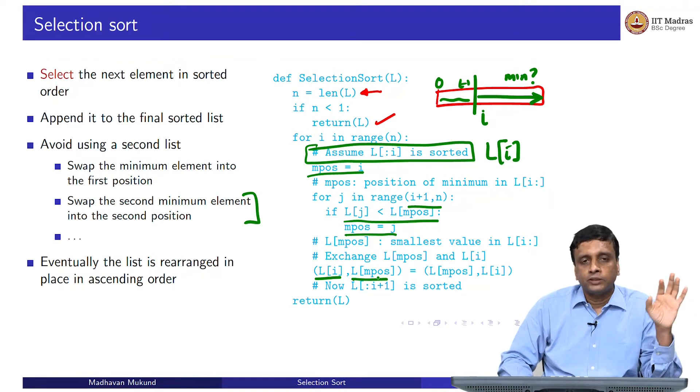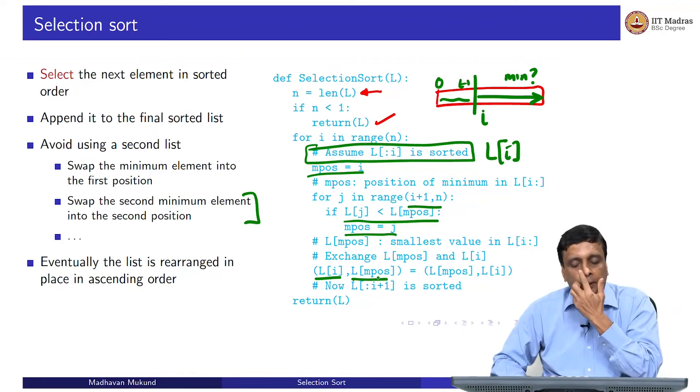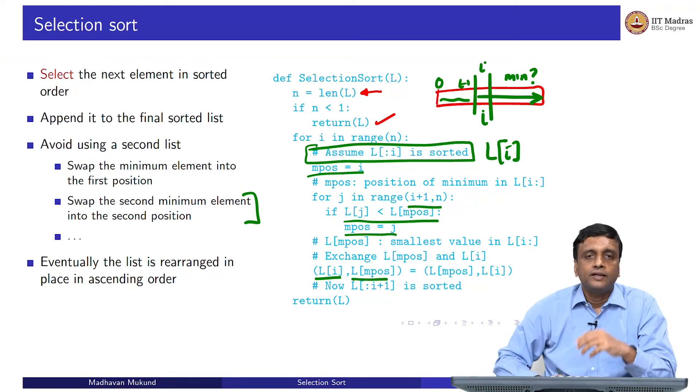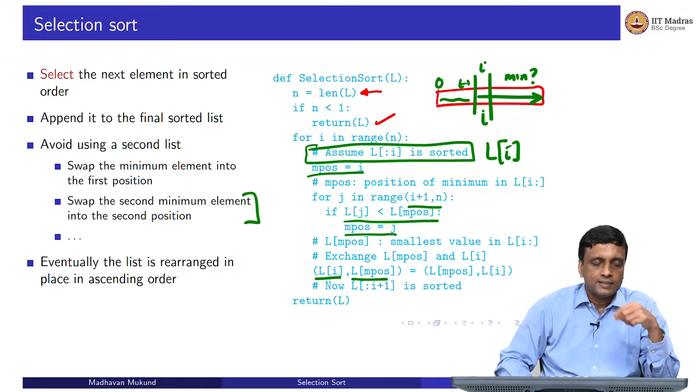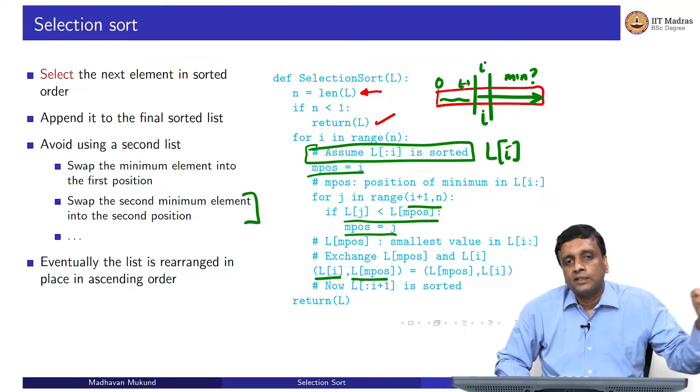If L of i was already the minimum position, it just gets exchanged with itself, which is no use. But if we did find a smaller one further to the right, then we would bring it here. What have we achieved? We have achieved that now, I have moved this boundary from i minus 1 to i. Earlier before I did this pass, 0 to i minus 1 was sorted. Now I have found the correct thing to put in position i, so that 0 to i is sorted. I keep doing this for i going from 0 to n minus 1. Eventually, every time I move, one more extension of the sorted segment happens and the whole thing becomes sorted.